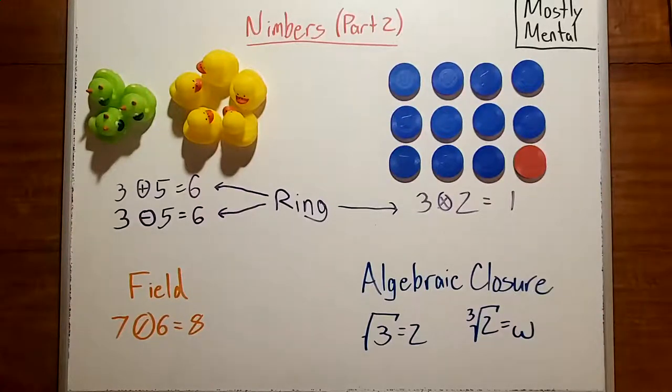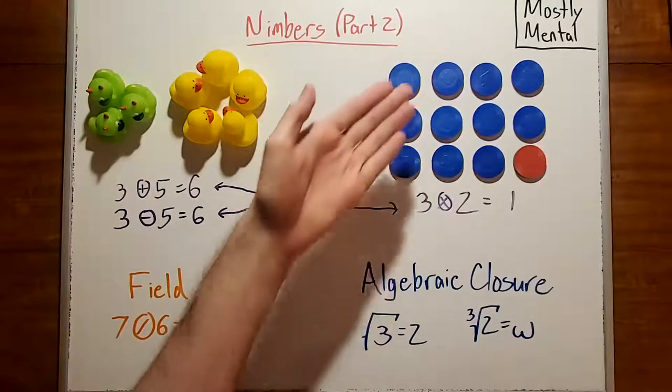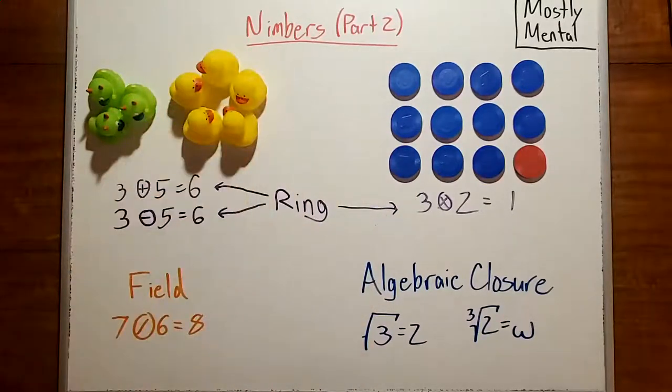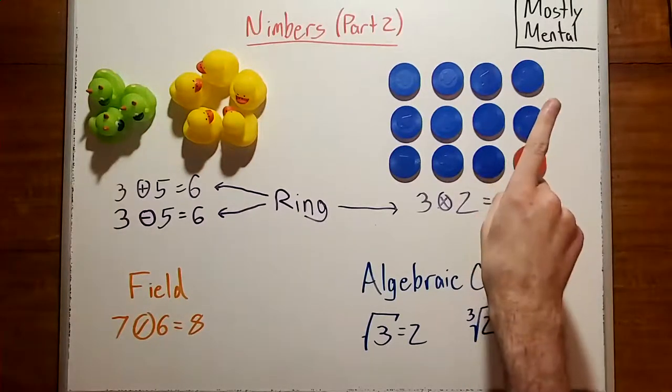Today, I'd like to continue my mini-series on game theory. Last time, we started exploring the nimbers as they arise from games. And if you haven't seen that video, this one won't make much sense, so go watch that first.